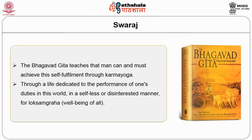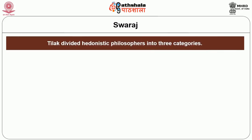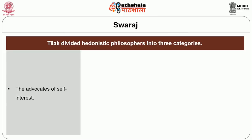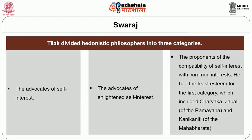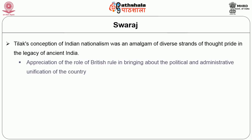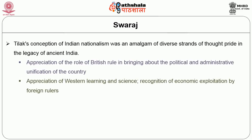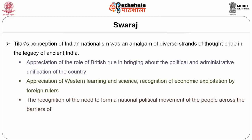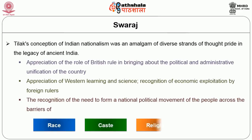For Lok Sangraha, i.e. the well-being of all, Tilak divided hedonistic philosophers into three categories: first, the advocates of self-interest; second, the advocates of enlightened self-interest; and third, the proponents of the compatibility of self-interest with common interests. He had the least esteem for the first category, which included Charvaka, Jabali of the Ramayana, and Kanikananiti of the Mahabharata. Tilak's conception of Indian nationalism was an amalgamation of diverse strands of thought: pride in the legacy of ancient India, appreciation for British rule's role in political and administrative unification, appreciation of western learning and science, recognition of economic exploitation by foreign rulers, and recognition of the need to reform a national movement of the people across barriers of race, caste, religion and sex.